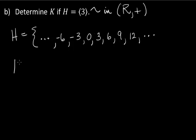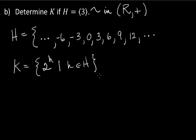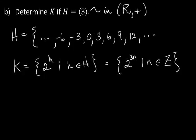Now let's write what K is. K is the set of all powers of 2 to the h, where little h comes from H. That would be 2 to the 3N, where N comes from the integers. We could write H as the set of all 3N with N in Z, and that helps because then we can characterize the exponent as a multiple of 3.